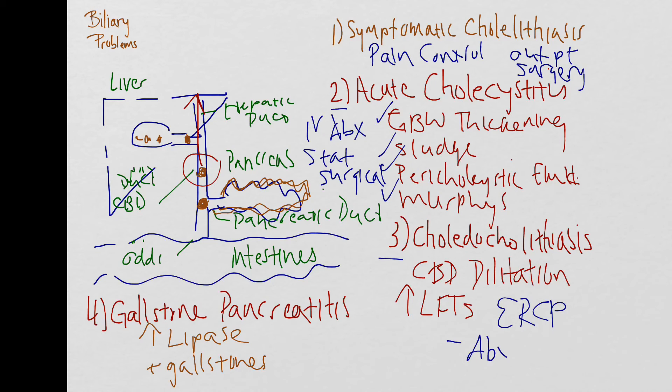Finally, for gallstone pancreatitis, it's the same thing. You've got to get the stone out of there. In order to do that, you'll want to coordinate for an emergent ERCP. Again, these patients generally do not need antibiotics unless there are actually signs of infection, as we discussed with choledocholithiasis. If your patient does have fever or elevated white count or other signs of infection, then you will want to start them with antibiotics.